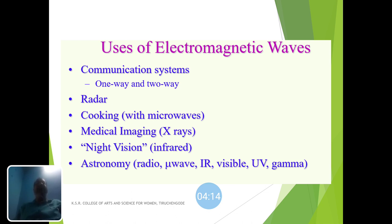Medical imaging uses X-rays, which play a vital role in the medical field. Night vision uses infrared waves. Electromagnetic waves are used in astronomy — including radio waves, microwaves, infrared waves, visible rays, UV rays, and gamma rays — covering the full electromagnetic spectrum.